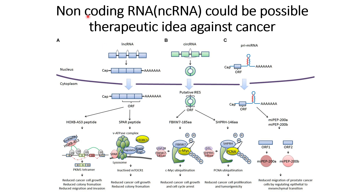In this video we will discuss another idea that could be a possible therapeutic target against cancer, and that is non-coding RNAs. For a long period of time it was understood that non-coding RNAs do not code for any proteins or peptides. However, recently people have found that non-coding RNAs are also capable of coding proteins or peptides, usually less than 100 amino acids. We will discuss three categories: long non-coding RNAs, circular RNAs, and pre-micro RNAs, and how they can be used to target cancer cells.